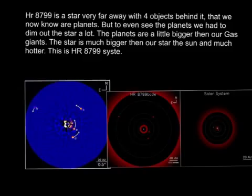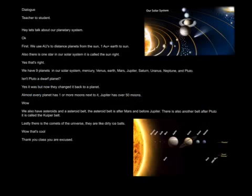But to even see these planets, we had to dim out the star a lot. The planets are a little bigger than our gas giants. The star is much bigger than our star, the sun, and much hotter. This is HR 8799 system.